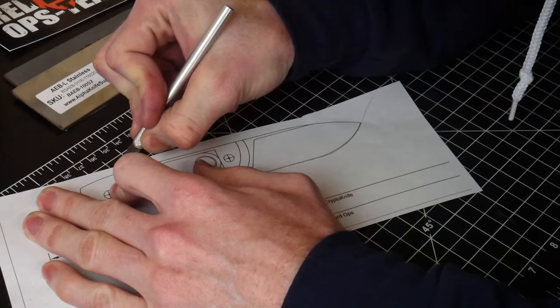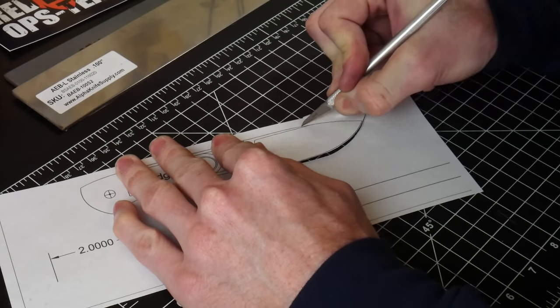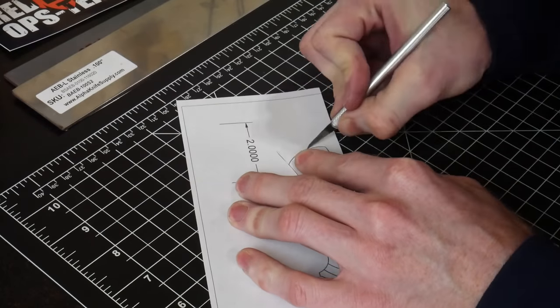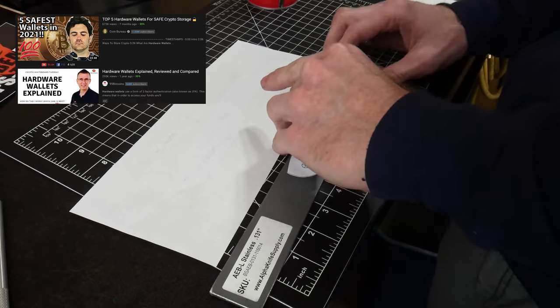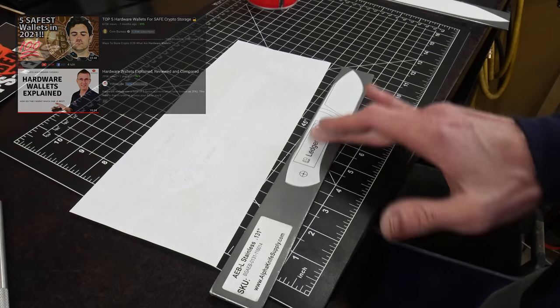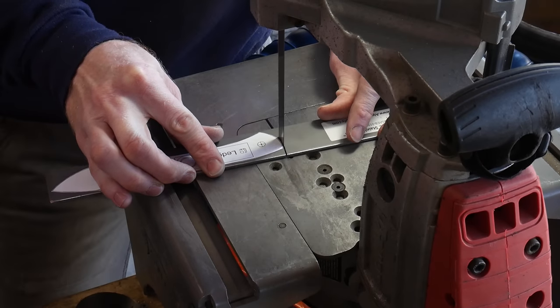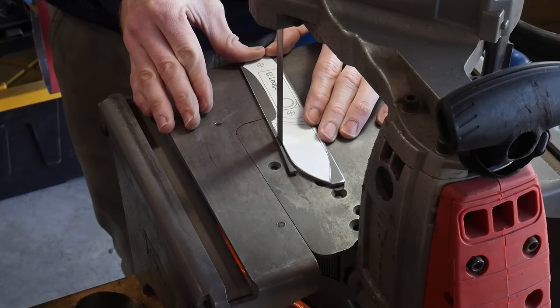All righty guys, welcome back to the shop. Today we're going to be making a knife that can secretly hold a cryptocurrency hardware wallet. There are many detailed videos on YouTube explaining how to self-custody your Bitcoin private keys offline on a hardware wallet. However, that is not the goal of this video, but for the sake of understanding what we're doing here today, I'll provide some cliff notes.